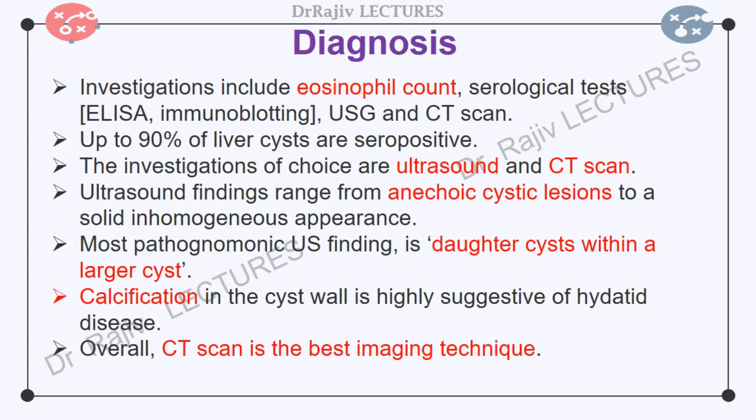Overall, CT scan is the best imaging technique. Imaging methods may reveal hydatid sand, which is a fluid layer of different density. Hydatid sand contains protoscolices. The most pathognomonic finding, if present, is daughter cysts within the larger cysts. Ultrasound or CT scan of alveolar hydatid cysts reveals solid masses and plaque-like calcification. If biliary involvement is suspected, ERCP or percutaneous transhepatic cholangiography may be necessary.